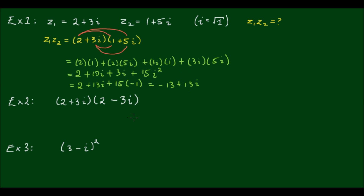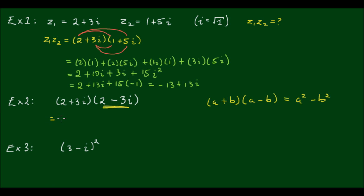For the second example, this is quite a special case, because the second term here is what we call the complex conjugate of the first term. As you'll see, whenever we multiply a complex number by its conjugate, we will get a real number. And remember in algebra, whenever we have a plus b times a minus b, we get a squared minus b squared as the result. It's the same principle here, so taking this shortcut, I should get 2 squared minus 3i squared.